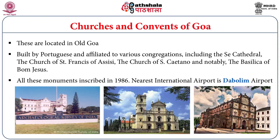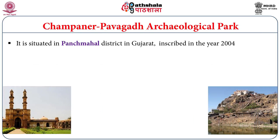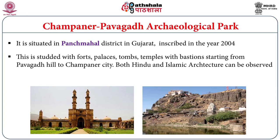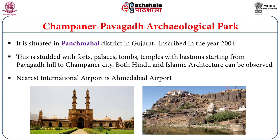The Champaner-Pavagadh Archaeological Park is located in Panchmahal district of Gujarat state and was inscribed in the year 2004. This archaeological site contains forts, palaces, tombs, and temples extending from Pavagadh Hill to Champaner city. It reflects both Hindu and Islamic architectural styles observable in different forms like forts and palaces. The closest airport is Ahmedabad airport. Apart from air transportation, road and rail transportation are also available. It is a very popular archaeological site visited by many cultural tourists.